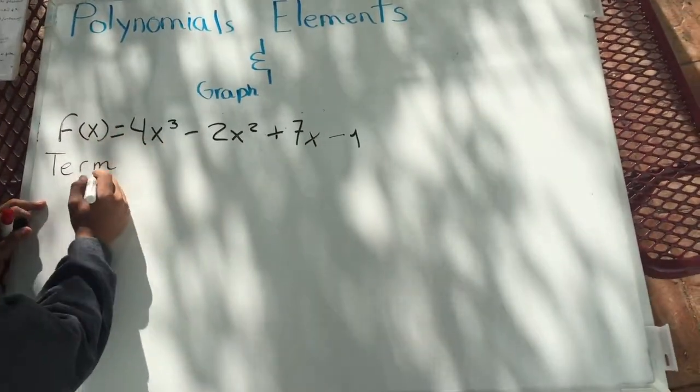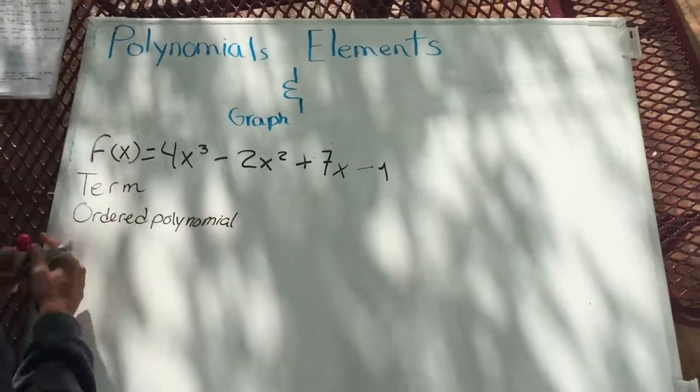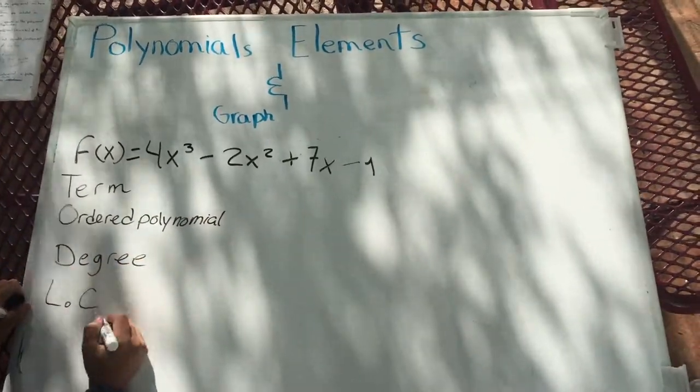The elements of a polynomial are the following: term, ordered polynomial, degree, leading coefficient, and constant.